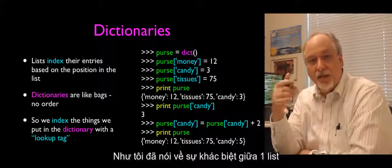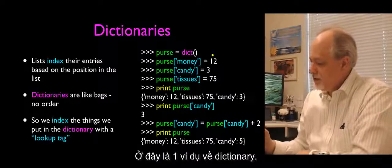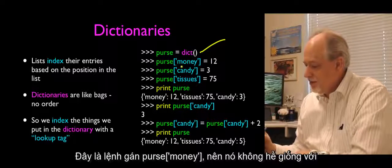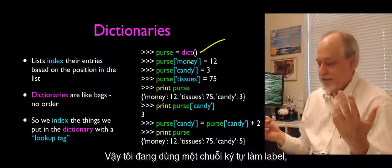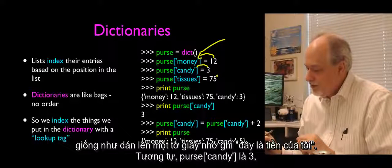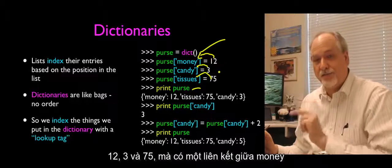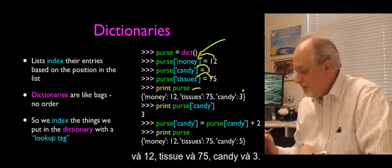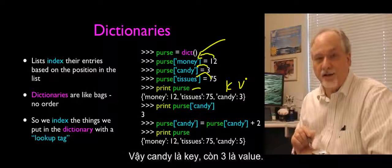The difference between a list and a dictionary is that they both can store multiple values — the question is how we label them, store them, and retrieve them. Here's an example: I'm going to make a thing called 'purse'. I'm going to store in purse: purse sub 'money' equals 12. I'm using a string as the index. Candy is 3, tissues is 75. It's not just the numbers 12, 3, and 75 as it would be in a list — it's the connection between 'money' and 12, 'tissues' and 75, 'candy' and 3. Candy is the key, and 3 is the value.